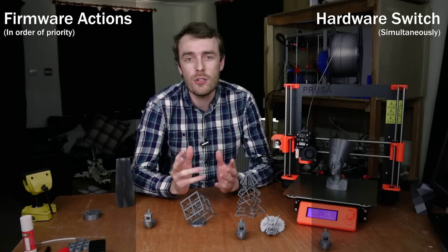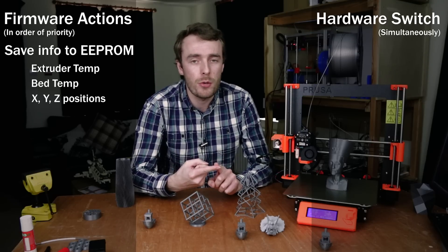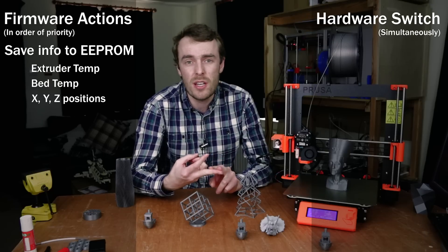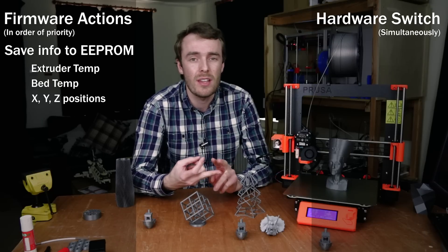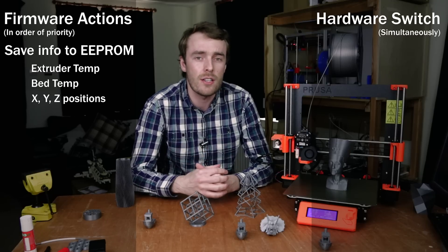To the best of my knowledge, the firmware tries to do three things. Firstly, it saves information about the current print to the EEPROM. This is something like the extruder temperature, the bed temperature, the x, y and z positions, and probably some other bits of data that I don't know the exact list of.